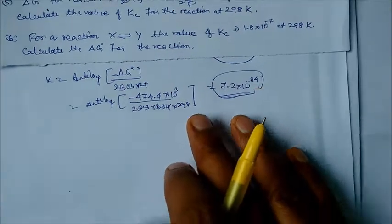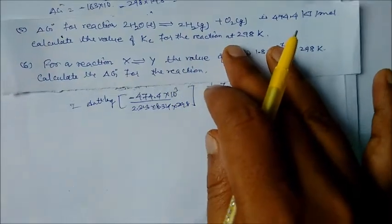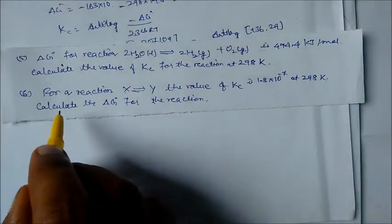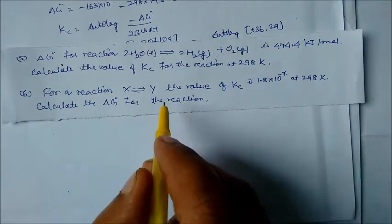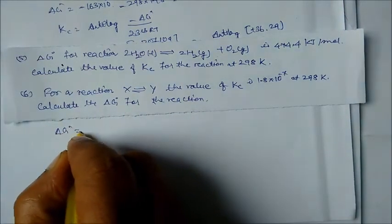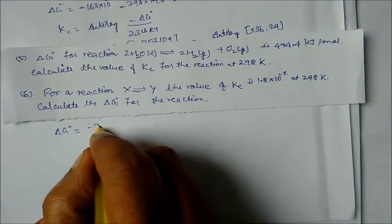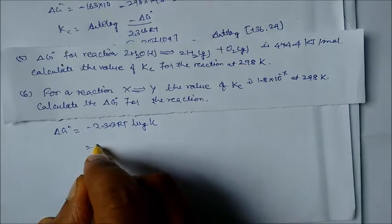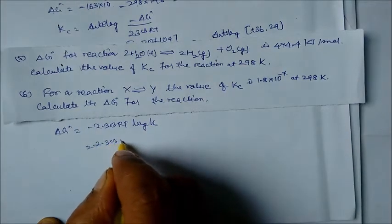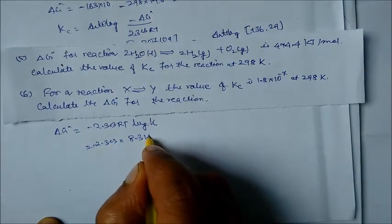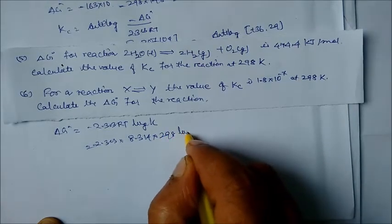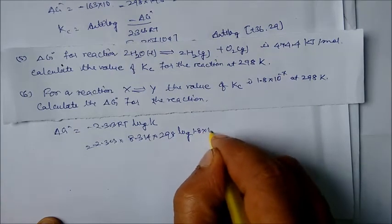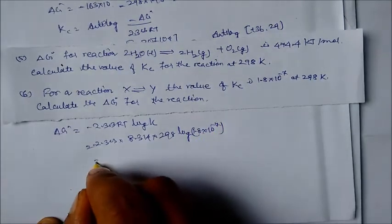Next reaction: X + Y ⇌ products, with Kc = 1.8 × 10⁻⁷ at 298 K. Calculate ΔG°. Using ΔG° = −2.303 RT log Kc = −2.303 × 8.314 × 298 × log(1.8 × 10⁻⁷).